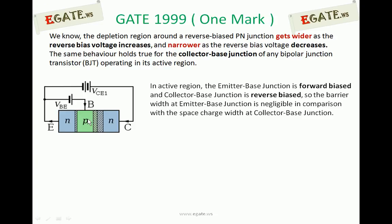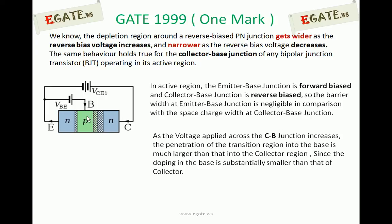Since the collector base junction is reverse biased, its depletion layer width is very large compared to the forward biased emitter base junction, as shown in the diagram. The emitter base depletion width is very small, while the collector base depletion width is very large. If you increase the reverse bias voltage across the collector base junction, the depletion region gets wider and penetrates more into the lightly doped side. Since the base is more lightly doped than the collector, the depletion region penetrates more into the base than the collector side.